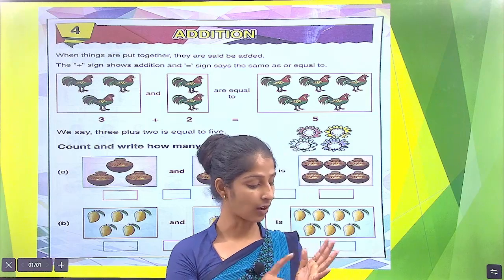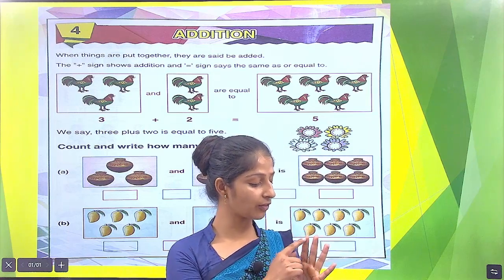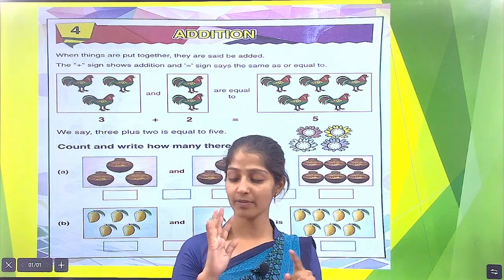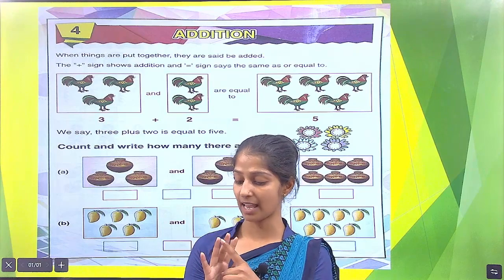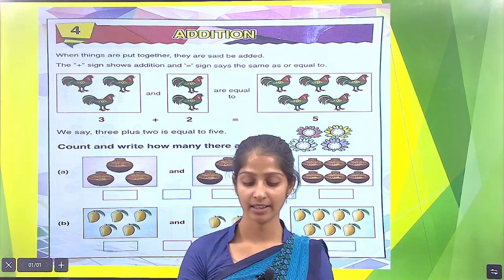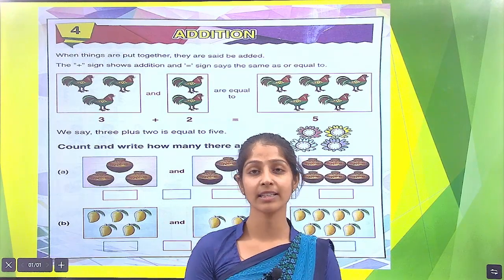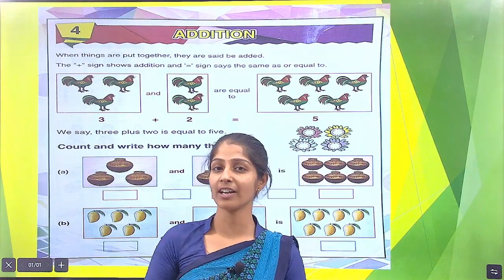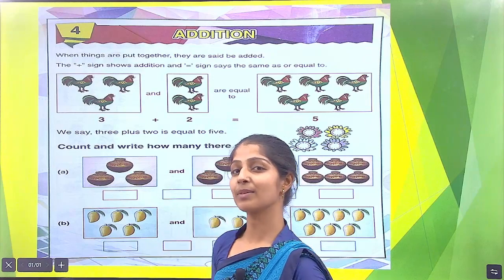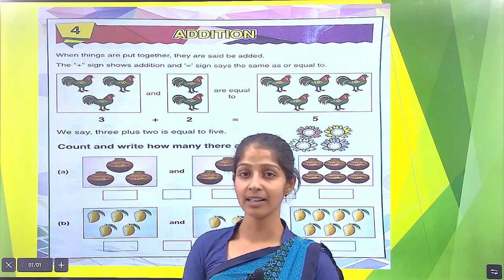Now count: 1, 2, 3, 4, 5, 6, 7, 8, 9, 10. How many fingers in your both hands? There are total 10 fingers. This process is called addition.